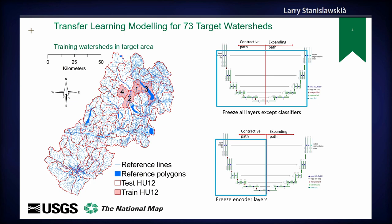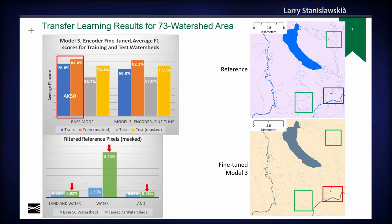To transfer the model to the target area, we used between one and four watersheds. In one case we froze all layers except the classification layers, and in another method we froze only the encoder layers. The results show the base model applied to predict over the 73 watersheds had average F1 scores of 57 and 74 for unfiltered and filtered. When we used our best transfer learning model trained with three watersheds, it did not improve the model at all.